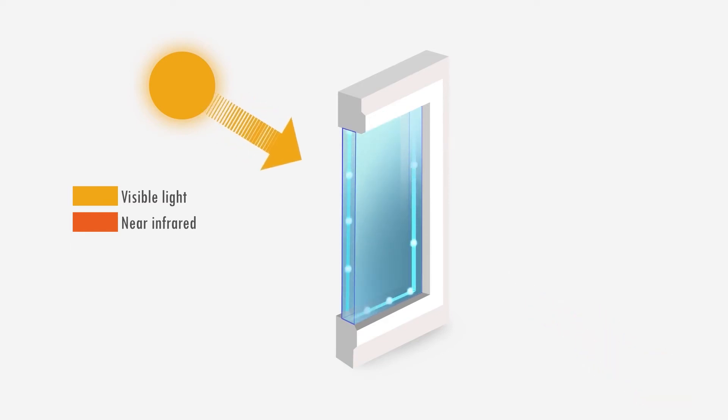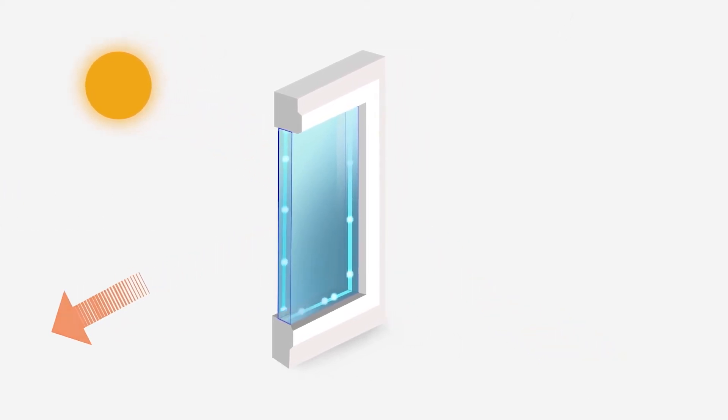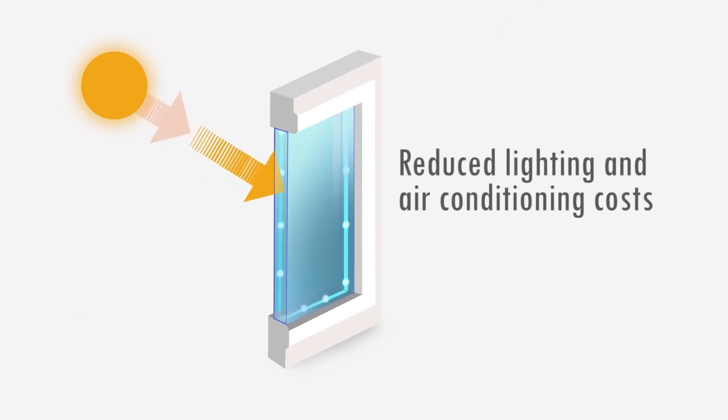Reducing the amount of near infrared light passing through, whilst at the same time maximizing the amount of visible light, can keep buildings cool during hot weather, yet bright at the same time, reducing the use of additional lighting and air conditioning.